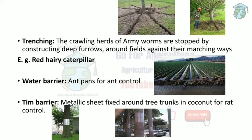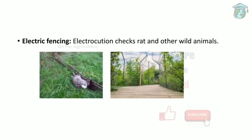Next is electric fencing, mainly used to prevent entry of animals such as rats, squirrels, and birds. Electric current is used, and when these animals try to enter the area they are killed. However, the main disadvantage is that electric fencing cannot stop insects or small pests — it only works for larger animals like birds, rats, and squirrels.